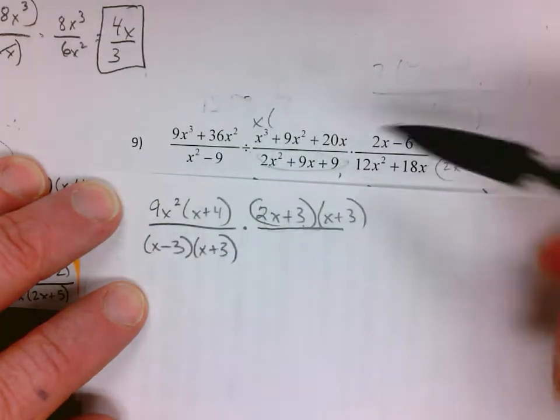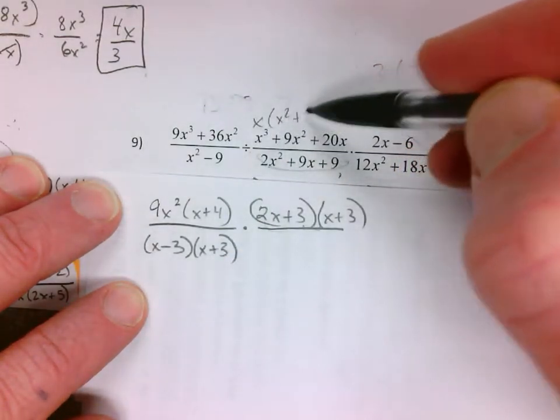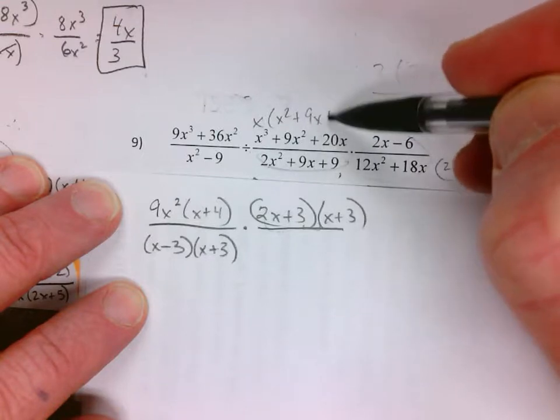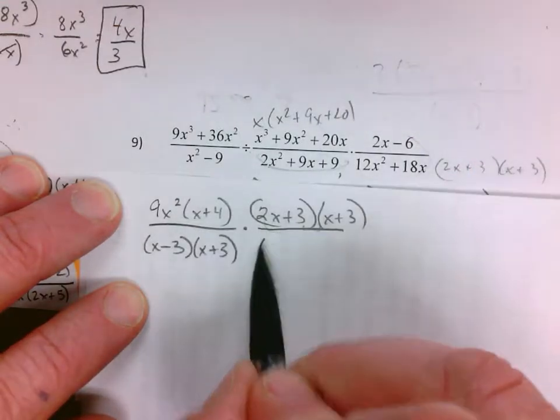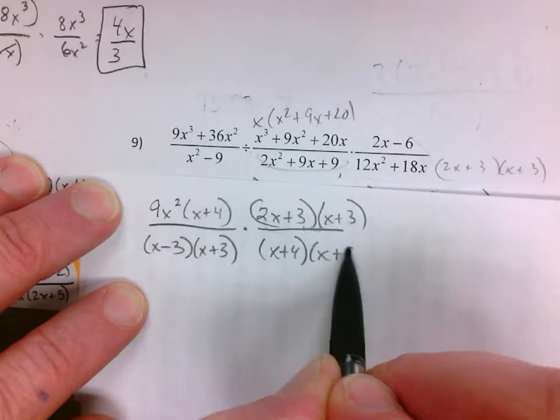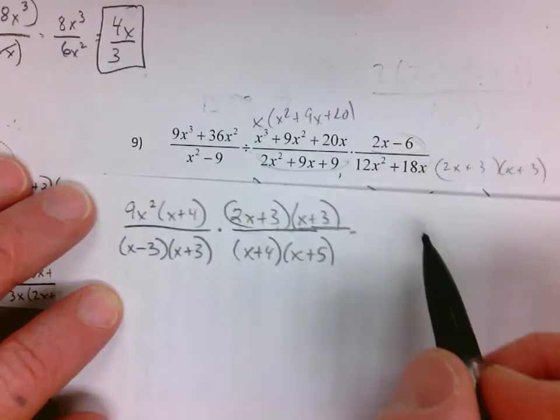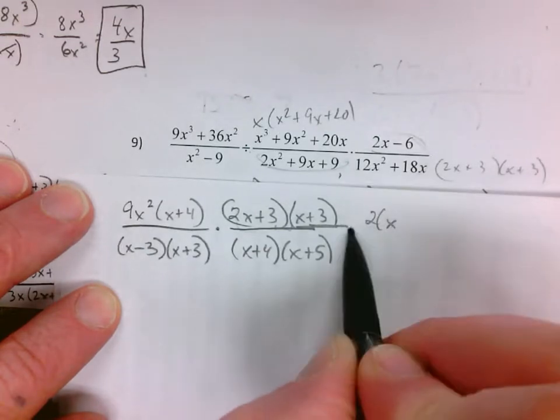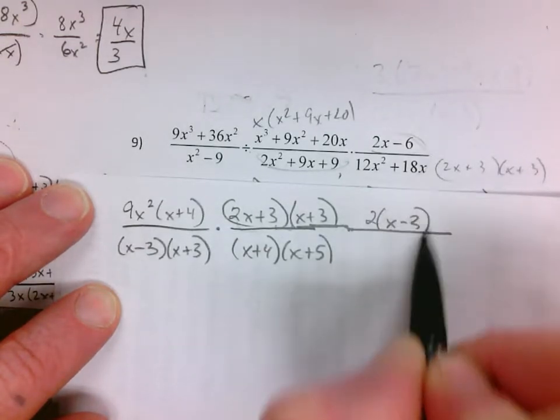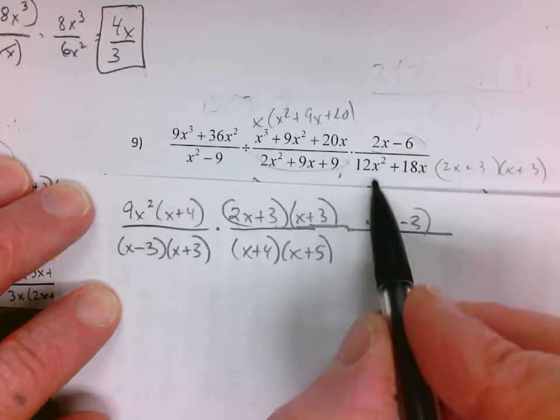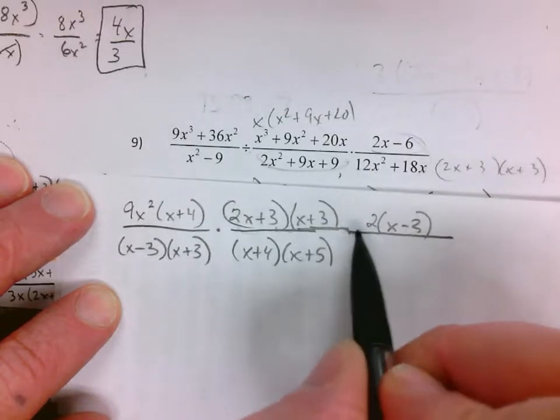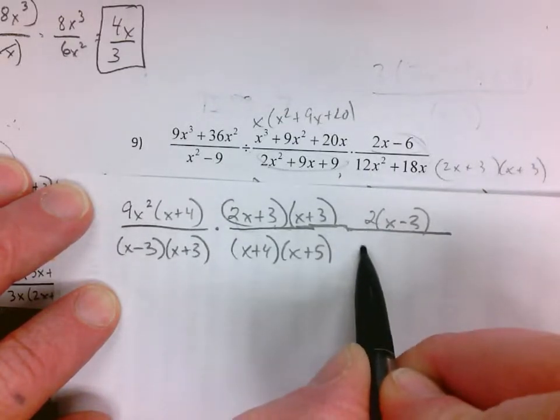x. So I have x squared plus 9x plus 20. This one factors into x plus 4, x plus 5. Take out the greatest common factor, and take out the greatest common factor here which is 6x, leaves...